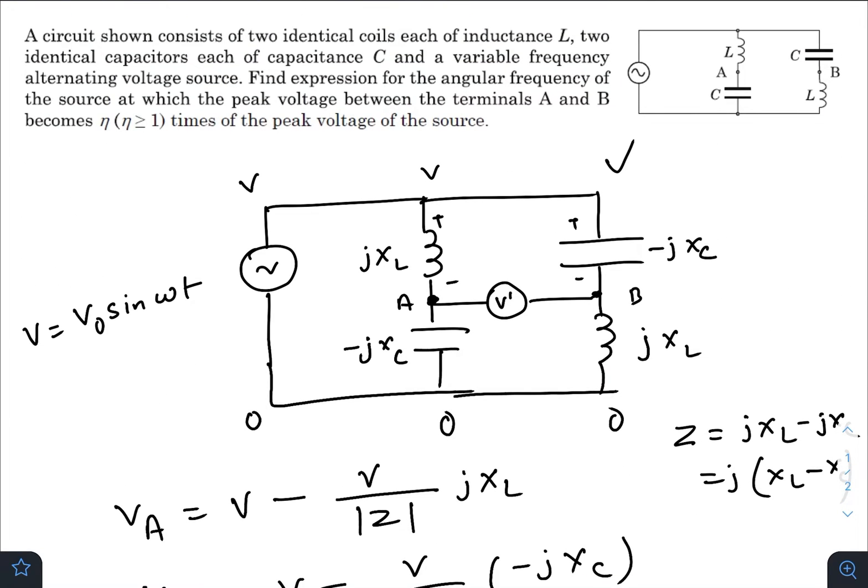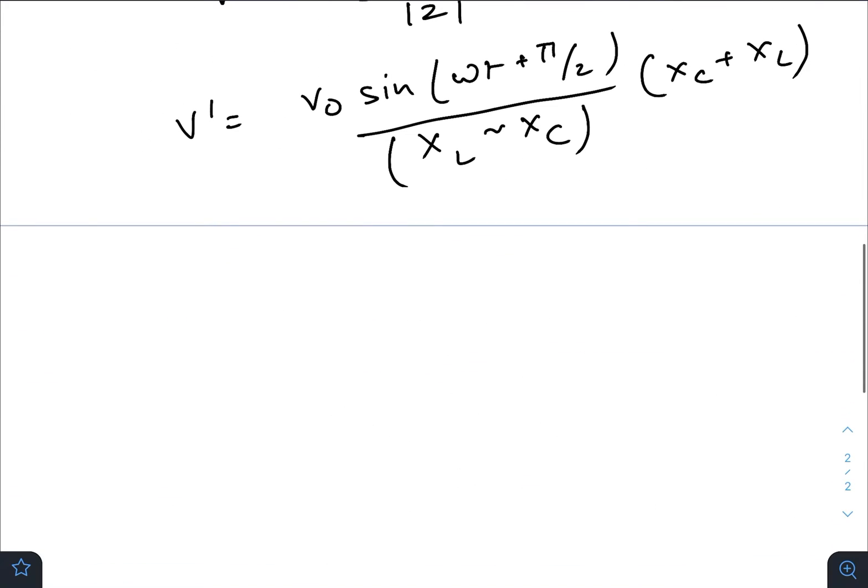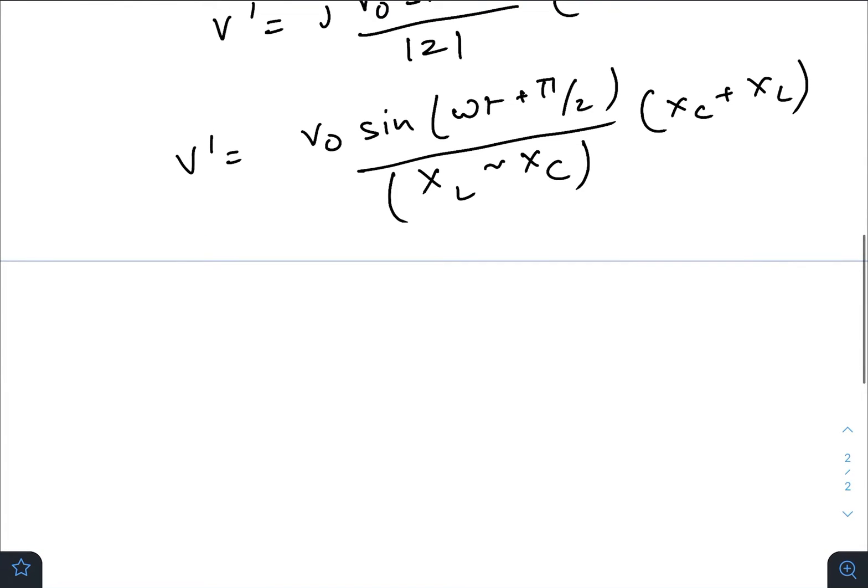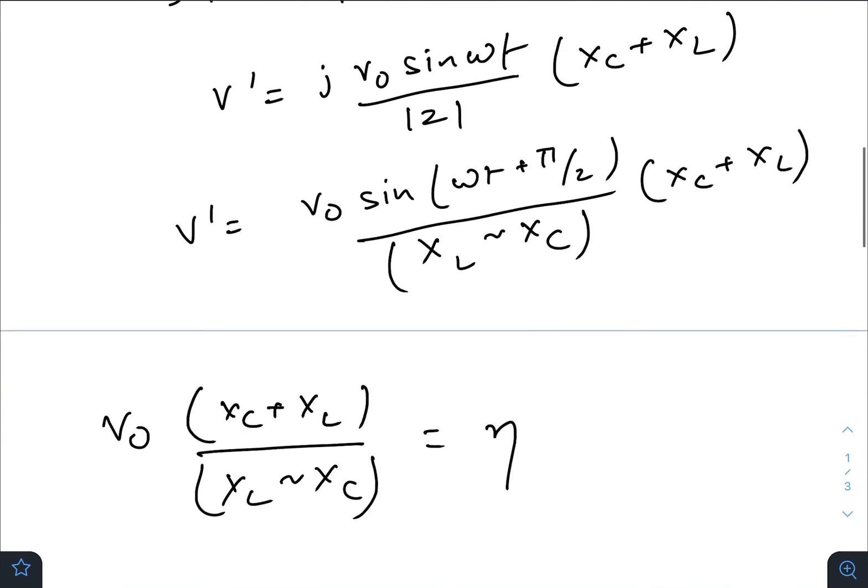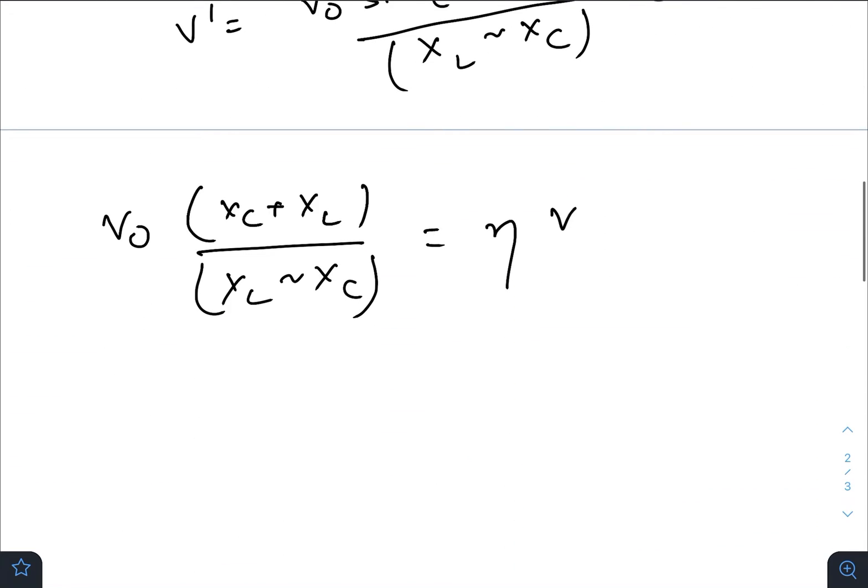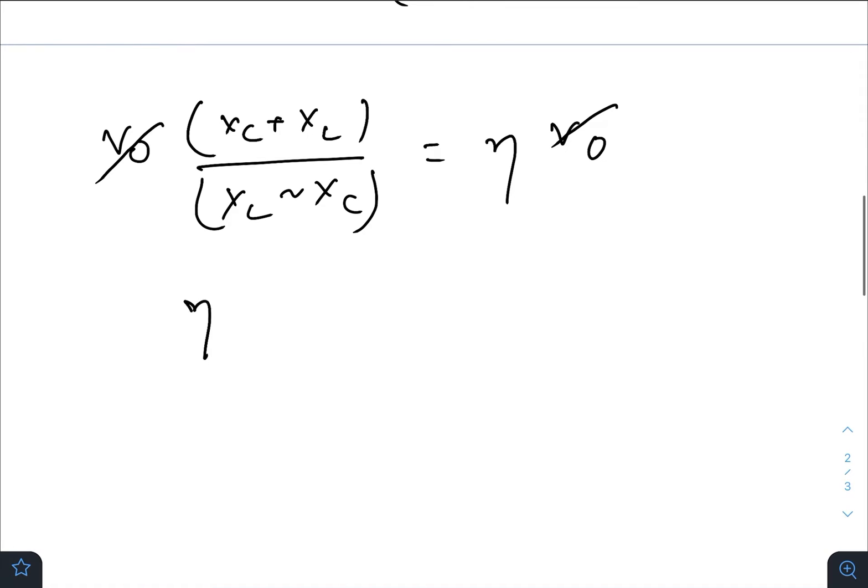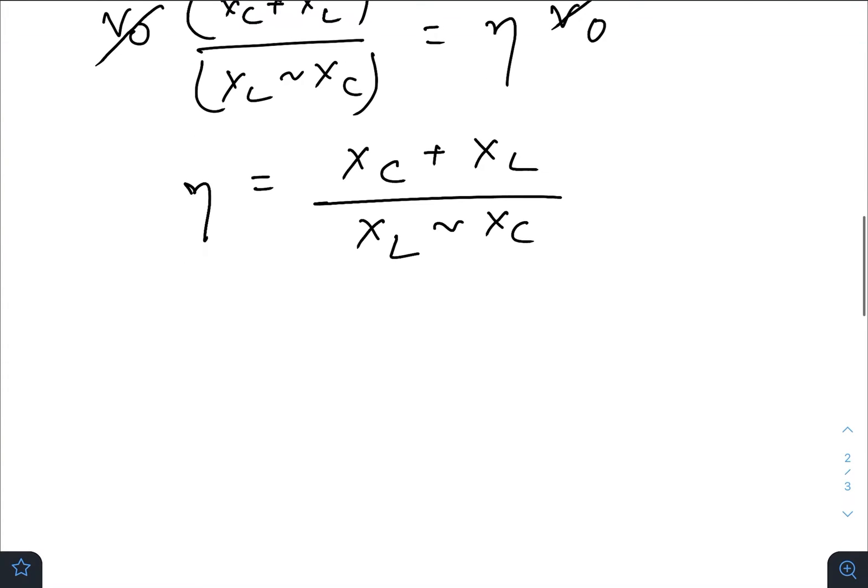The question asks that potential difference between the terminals A and B will be η times that of the peak voltage of the source. So the peak voltage at terminal A and B will be (XC + XL) divided by |XL - XC| equals η times V₀. So we have finally got η equals (XC + XL) divided by |XL - XC|.